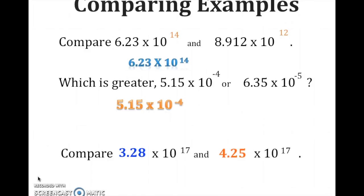Let's compare 3.28 times 10 to the 17th power and 4.25 times 10 to the 17th power. The exponents are the same, so we look at the decimal values: 3.28 and 4.25. A simple way to compare decimals is to think of money — $3.28 versus $4.25. Since $4.25 is more, the greater number is 4.25 times 10 to the 17th power.